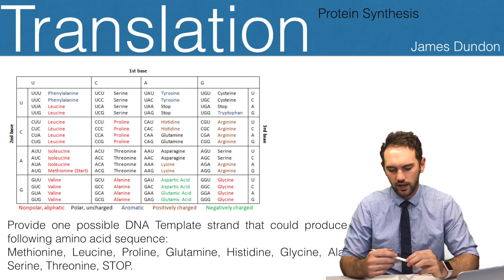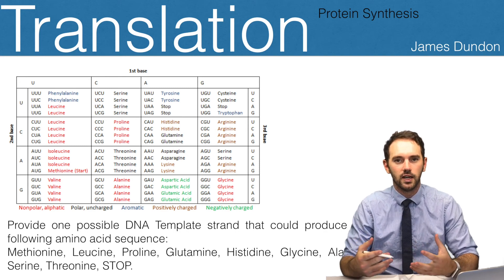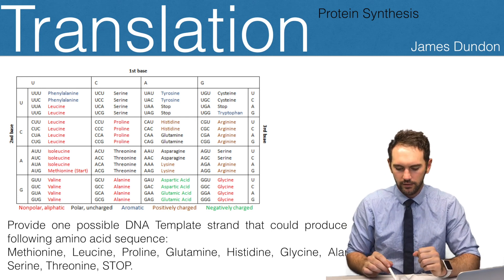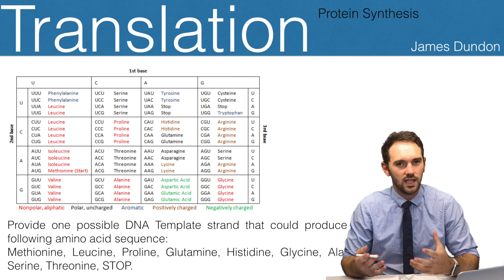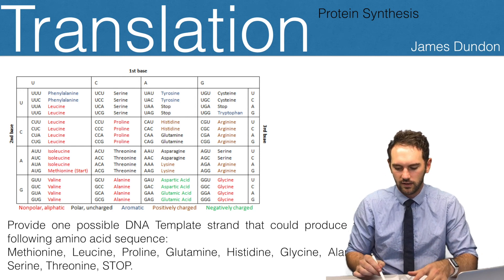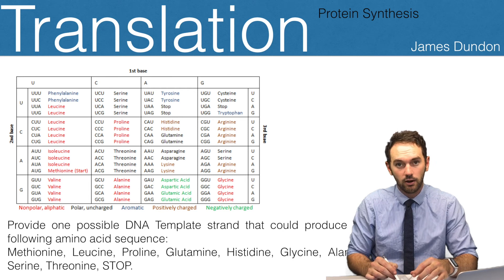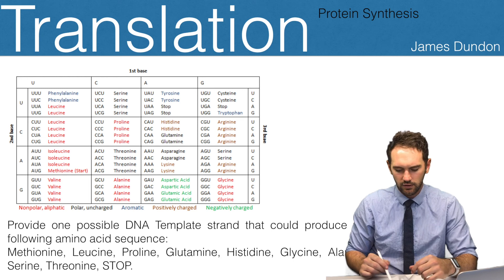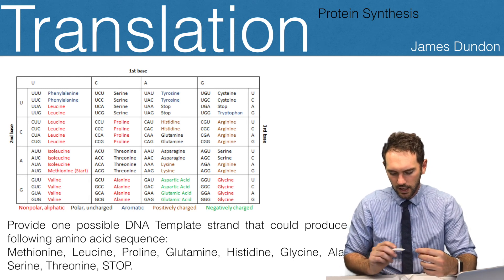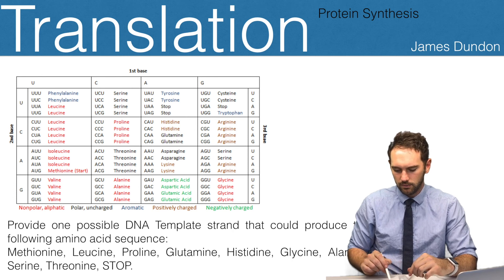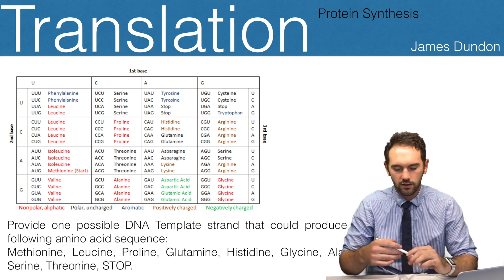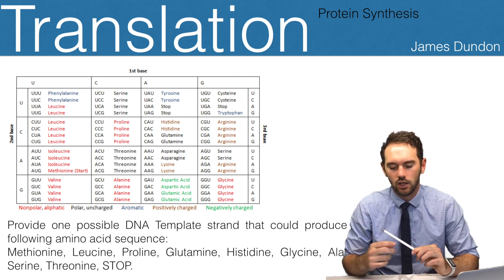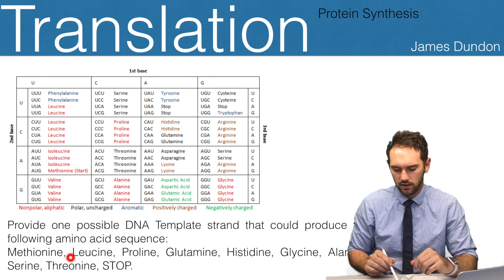You also might get a diagram like this. Maybe you've got the mRNA and now you're working off this. How do we know this is an mRNA table? Well, if you look, there's uracil. If it was DNA, they wouldn't have had the U, it would be thymine. So we know this is actually matching up our mRNA codons with the correct amino acid. I've put a question down the bottom here, and I'd like you to have a go at it. If we've got methionine, leucine, proline, glutamine, histidine, glycine, alanine, serine, threonine, and a stop, what might have the DNA template strand been to produce this sequence of amino acids? So have a go.